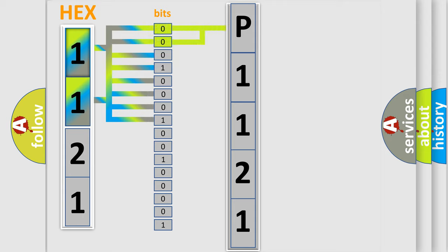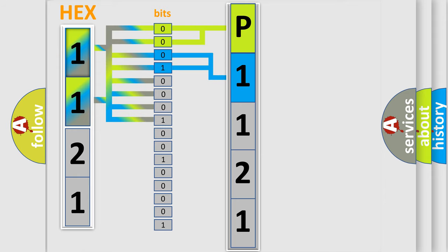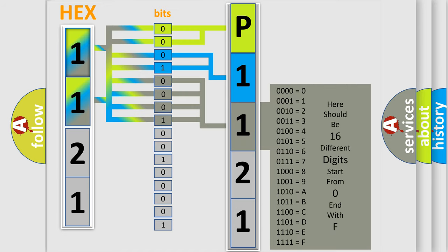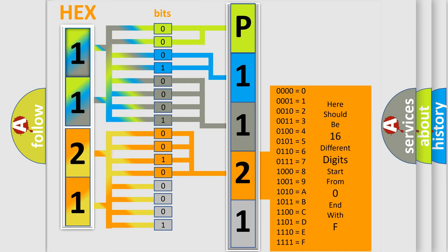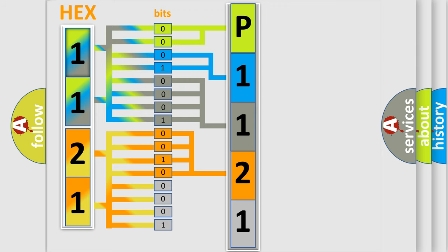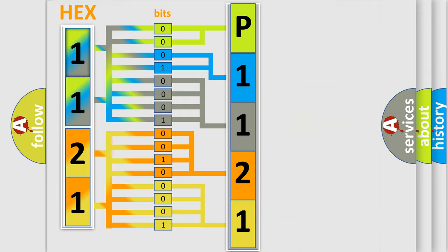By combining the first two bits, the basic character of the error code is expressed. The next two bits again determine the second character. The last bits of the first byte define the third character of the code. The second byte is composed of a combination of eight bits: the first four bits determine the fourth character of the code, and the combination of the last four bits defines the fifth character. A single byte conceals 256 possible combinations.